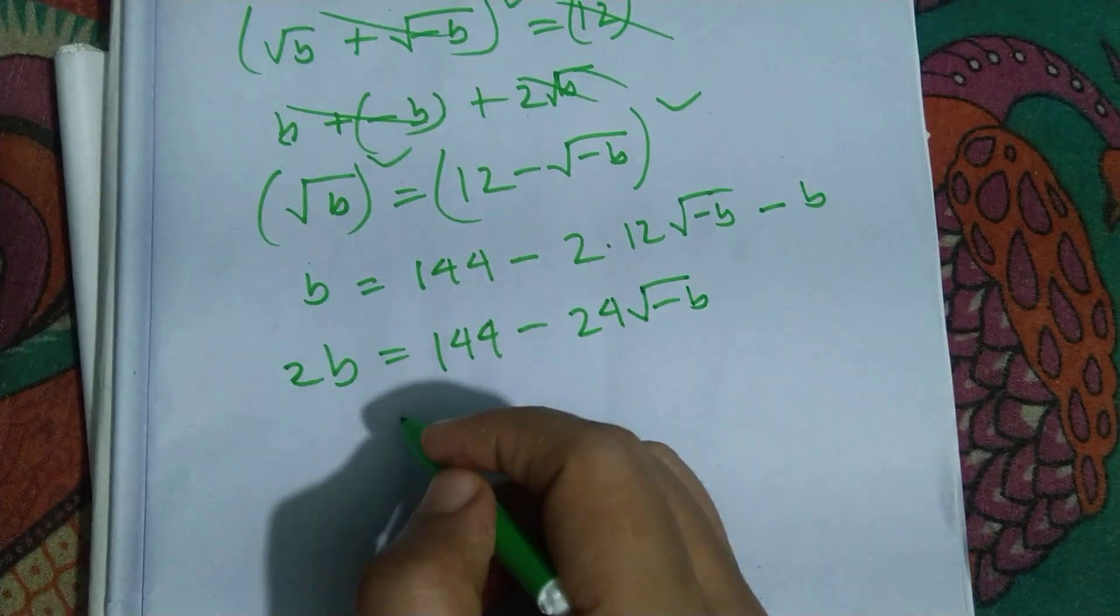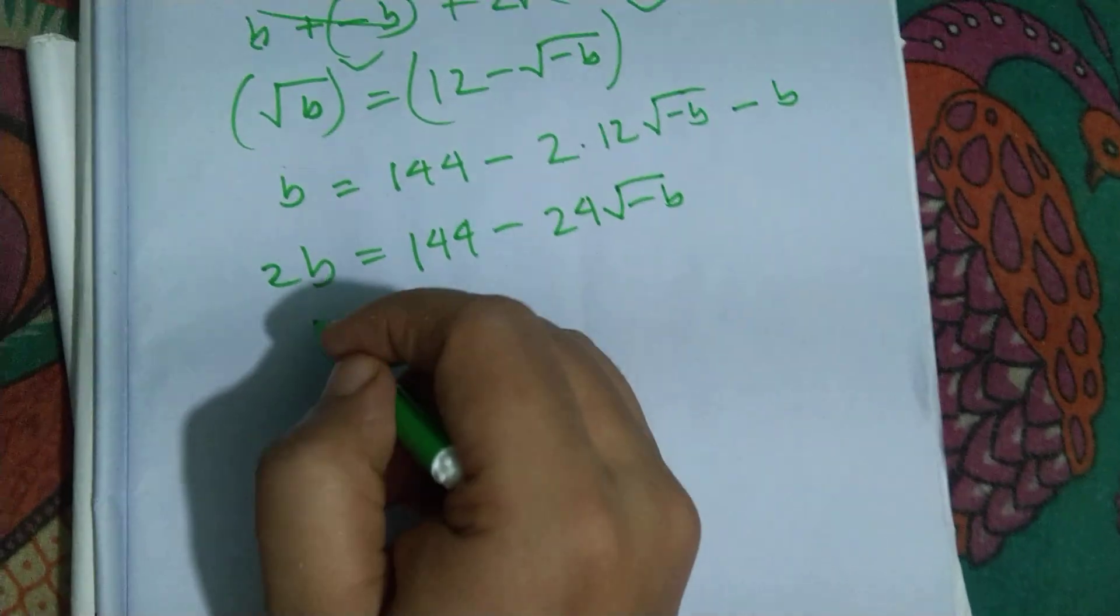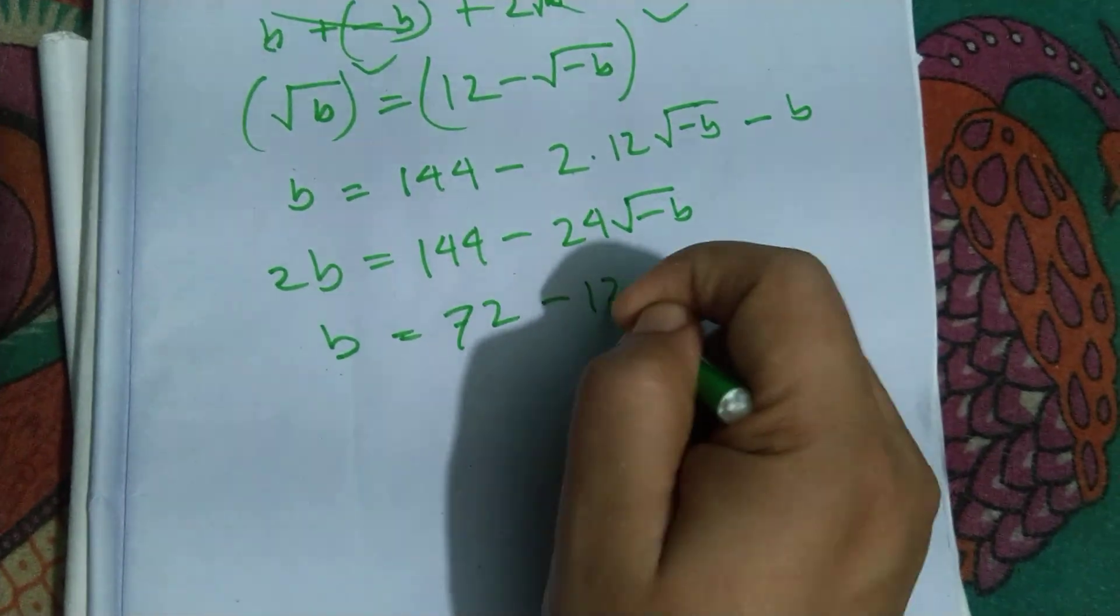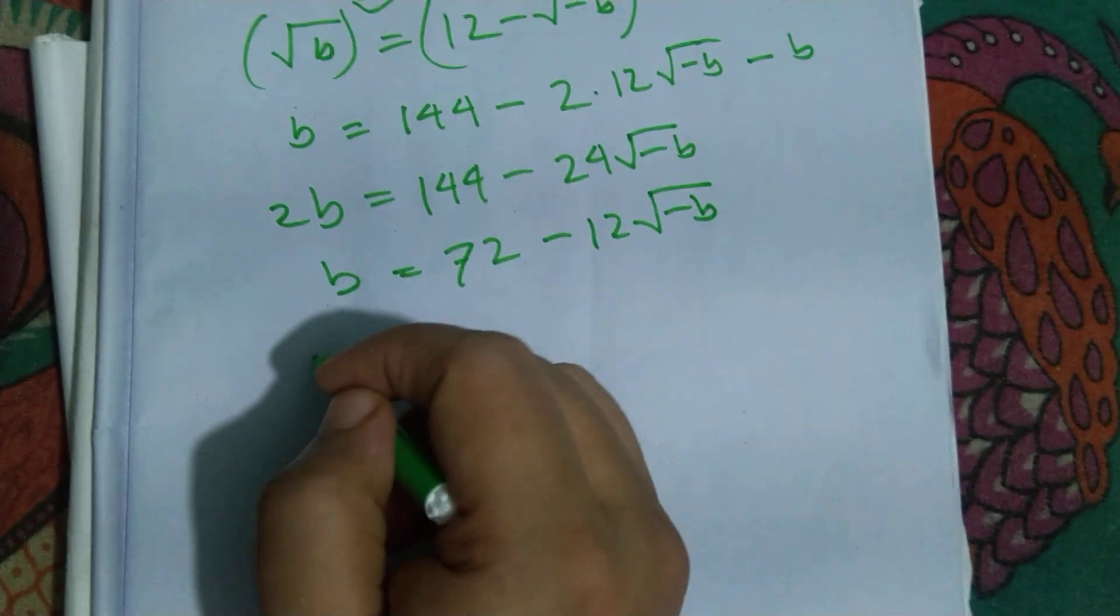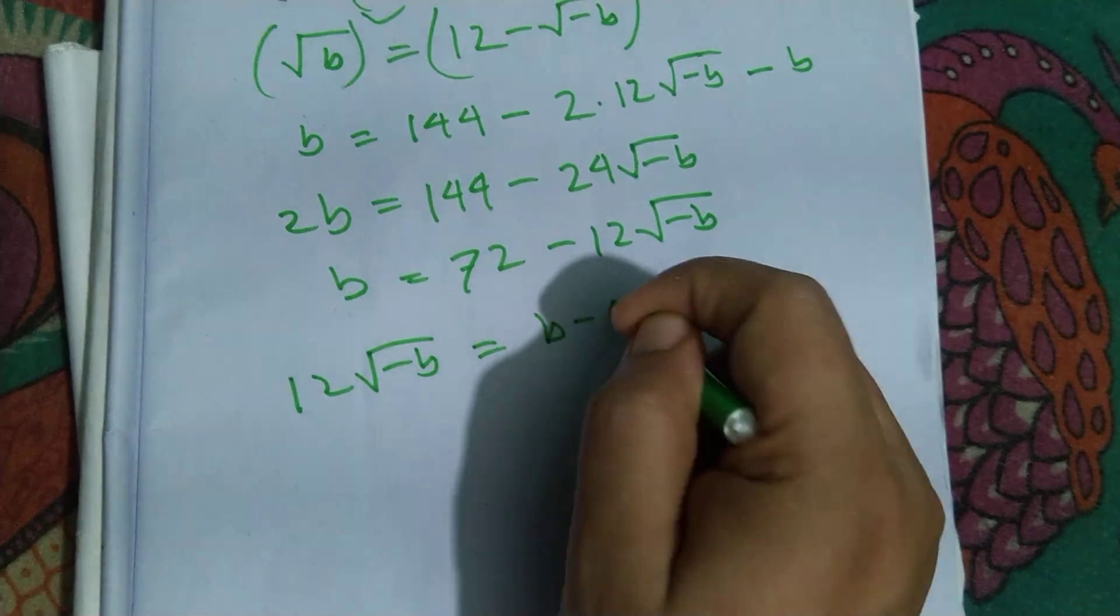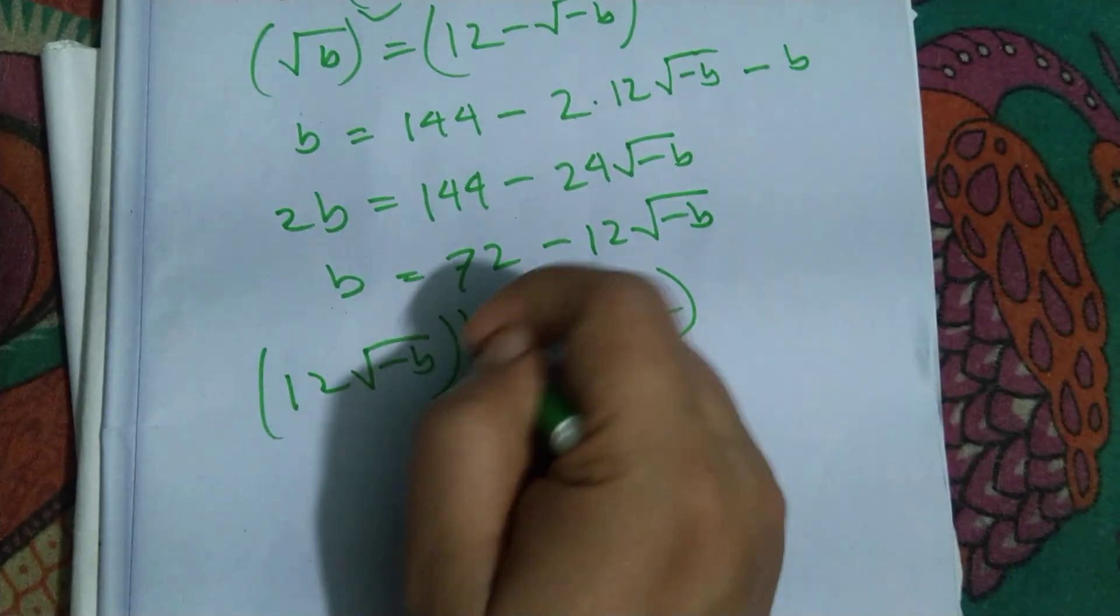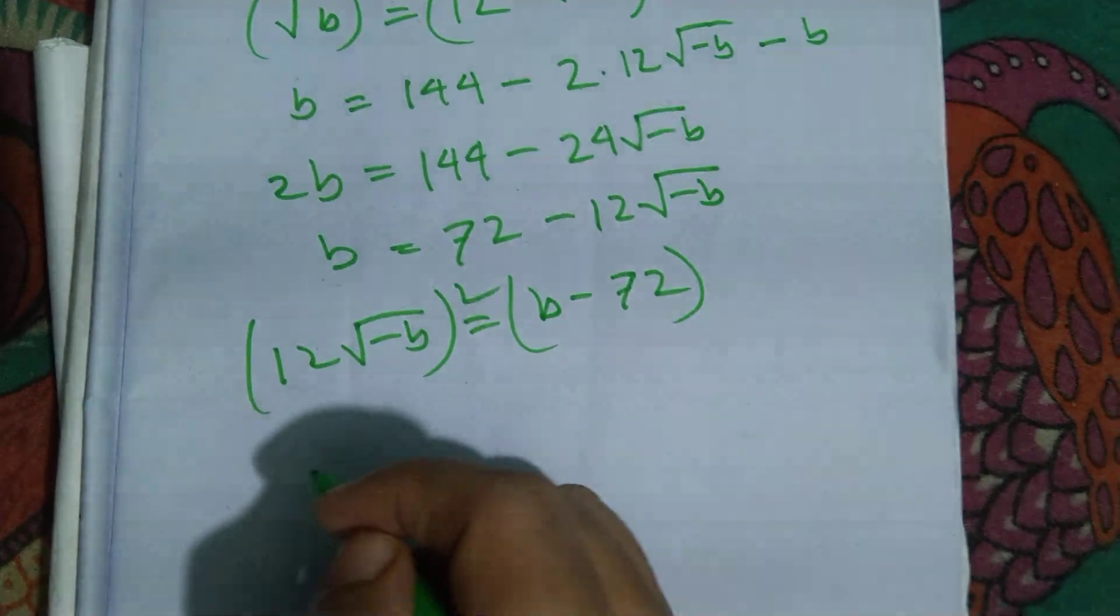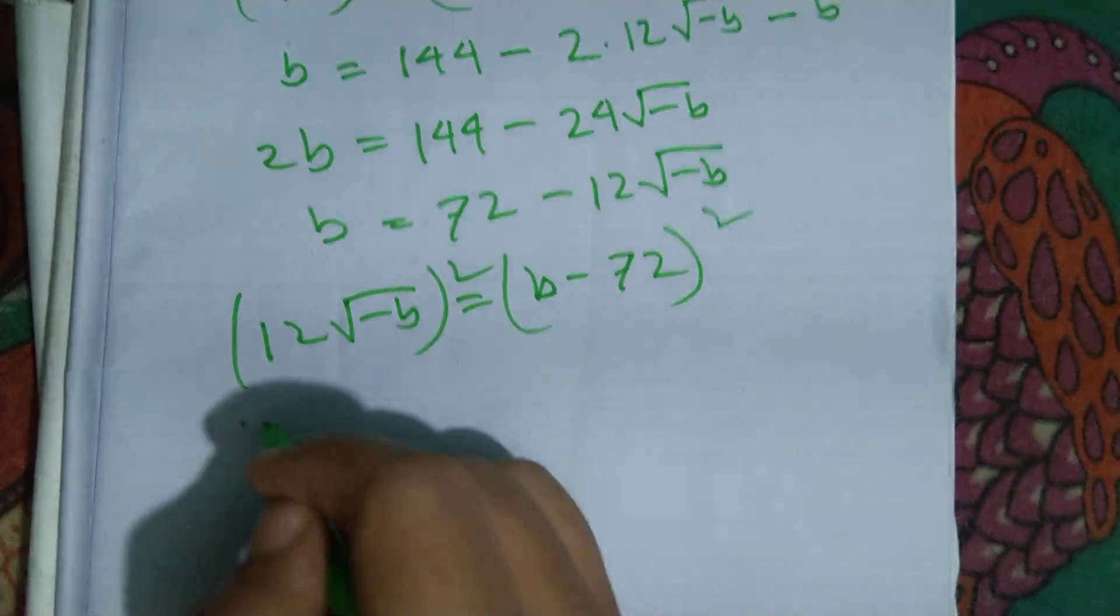And now it can be written this way: B minus 72 is equal to root over minus B. Now again, squaring both sides, so it can be written as B square plus 72 whole square minus 2 into B into 72.